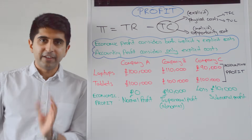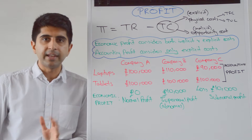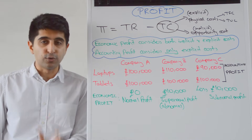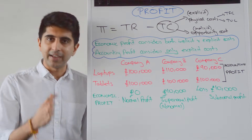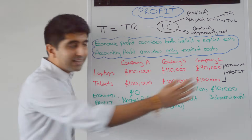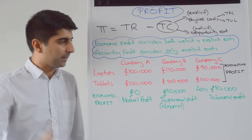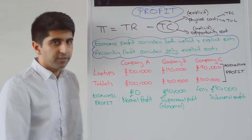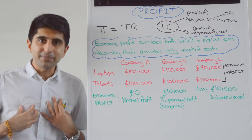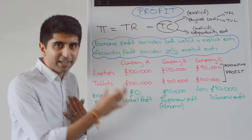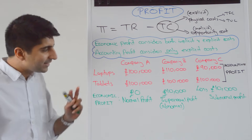You also need to know a definition of normal profit. Normal profit is the minimum level of profit required to keep factors of production in their current use. As long as you're making normal profit, it makes sense for you to continue producing whatever you're producing.